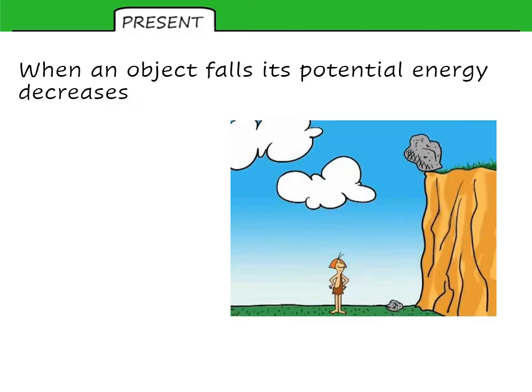When an object falls, its potential energy decreases. It changes usually to kinetic energy, and then at the bottom to thermal, to a sound pathway, and other forms of energy.